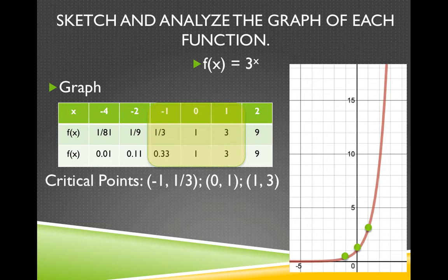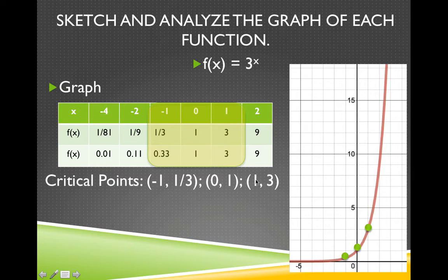There are some critical points you should remember so that when you graph these, you know the shape. We're going to add this function to our library of functions. When you put in negative 1, that means taking the reciprocal of the base. When you put in 0, you always get 1. And when you put in 1, the y value equals the base. So: negative exponent gives the reciprocal of the base, 0 always gives 1, and 1 always gives the base.